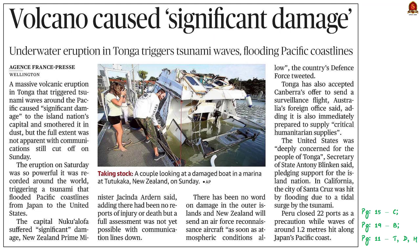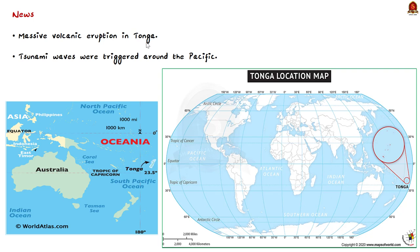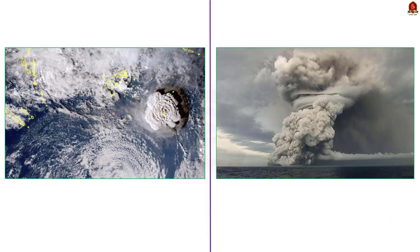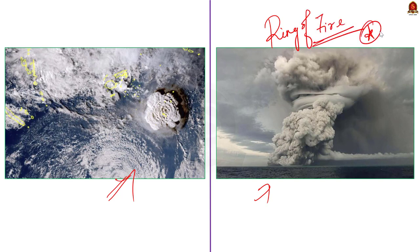Now look at this last news article. It is about the massive volcanic eruption in Tonga. As a result, tsunami waves were triggered around the Pacific Ocean. Tonga is a small archipelago in the South Pacific Ocean — see the map here showing its location in Oceania. The tsunami waves flooded coastlines of the Pacific from Japan to United States. The volcano here is an underwater volcano named Hunga Tonga-Hunga Ha'apai. The Tonga islands occur along the Ring of Fire — a perimeter of heightened volcanic and seismic activity that encircles the Pacific Ocean basin. Now let us understand what this Ring of Fire is.